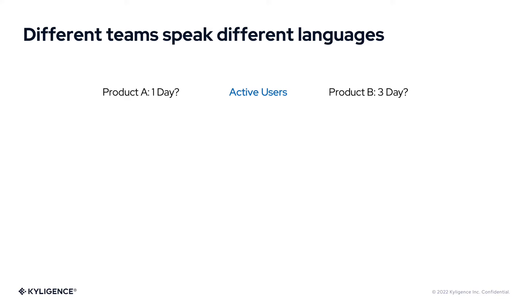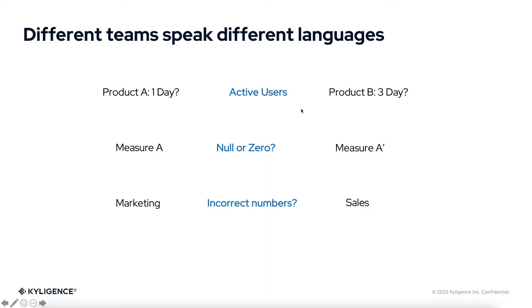Sometimes we know two things are not the same, but the difference is very minor. For example, when we count something, the result could be totally different depending on how to handle empty values — should we treat it as null or zero? If the data engineers and analysts are not on the same page, it's going to be a big problem. Another case is that we both know we are talking about the same thing — the measure has the same name and same definition — but inconsistent results may occur due to the quality of different data sources. Like the marketing team and sales team using different data sources: although they're talking about the same thing, they'll probably have different results.